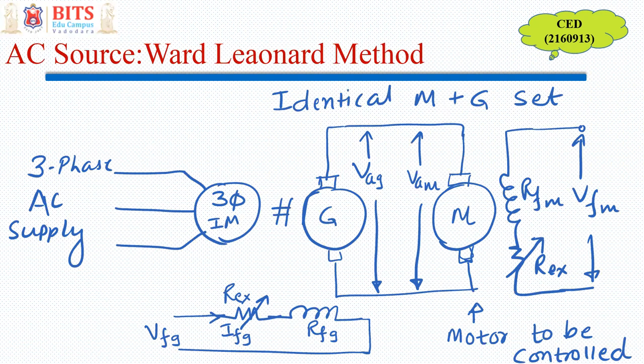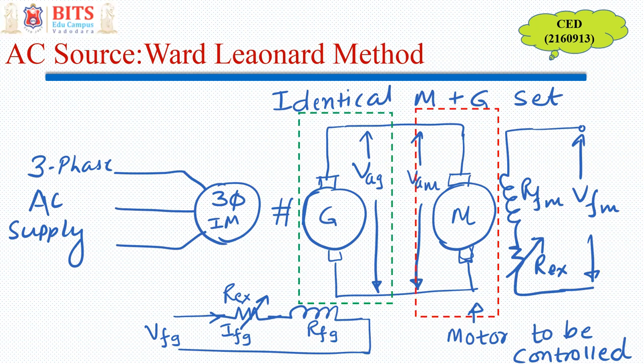Here you can see that the red dotted line shows the motor which is to be controlled — the speed of this motor is to be controlled. The armature of this motor is supplied by another identical machine operating as a generator, shown by the green dotted line. The output of this generator is fed as input to this motor, serving as the armature voltage.